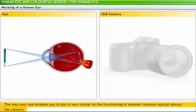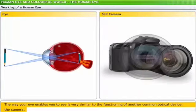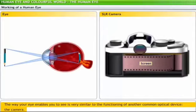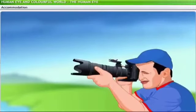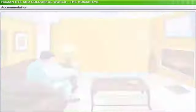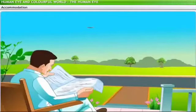The way your eye enables you to see is very similar to the functioning of a camera. SLR cameras use the same principles of refraction of light rays by lenses and interpretation of colors and brightness. Similar to the iris in the eye, a camera has an iris diaphragm to control incoming light, and the photographic film screen is similar to the retina. When using a camera, we adjust the focal length of its lens based on the distance of the object — but how does your eye do that?